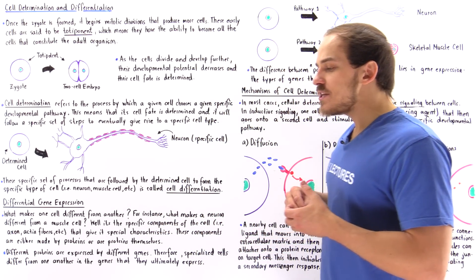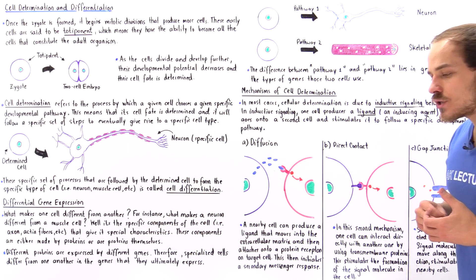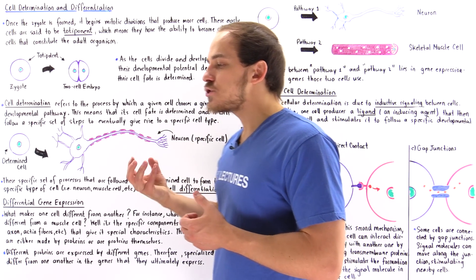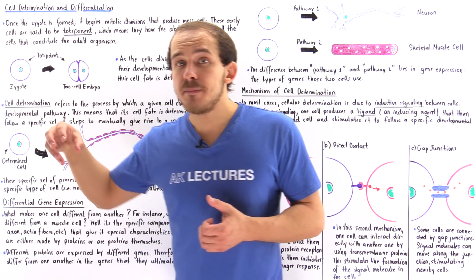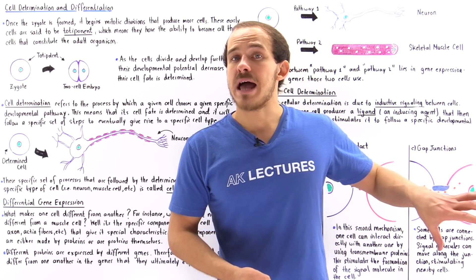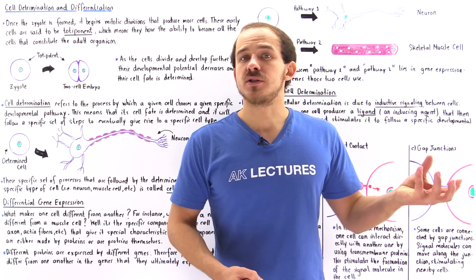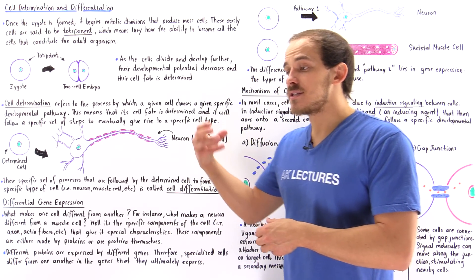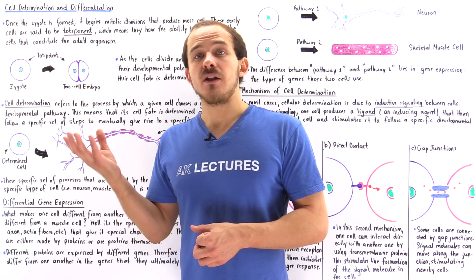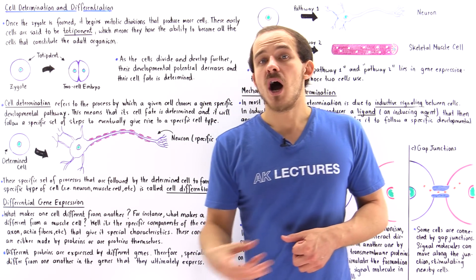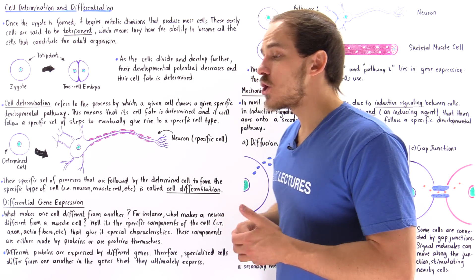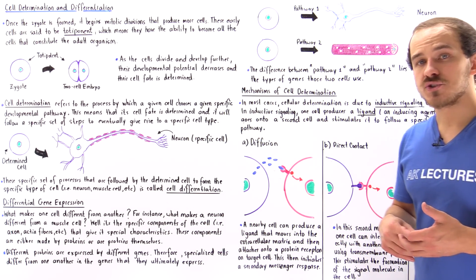So the question we're going to address in this lecture is: how exactly does an unspecialized cell know to begin a certain set of processes that eventually allows it to form a specialized type of cell? How does an unspecialized cell know, for example, to form a muscle cell and not a nerve cell? These are the questions we're going to address in this lecture.